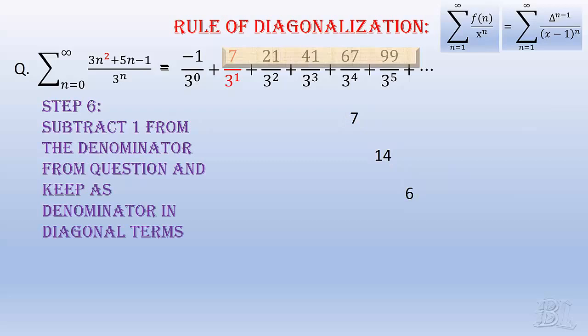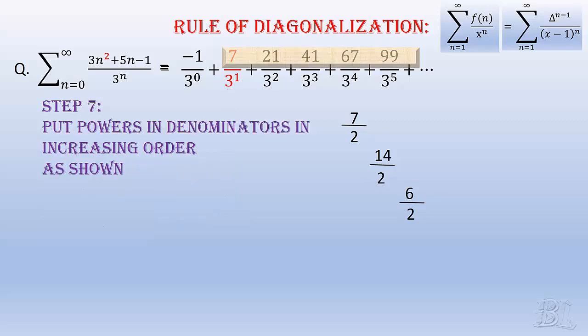Then, the denominator in our question is 3, so subtract 1, then you will get 3 minus 1 equals 2 and put it in the denominator in the diagonal elements. After this, put the powers in the denominator in increasing order starting from 1, as shown here.